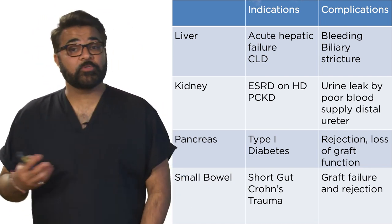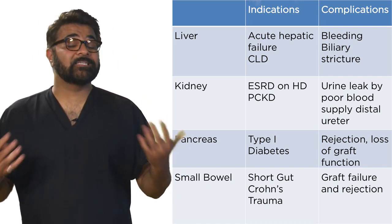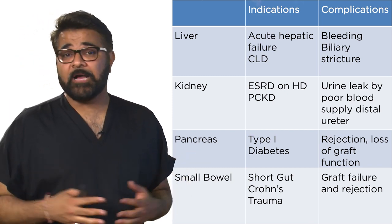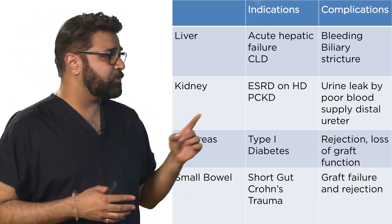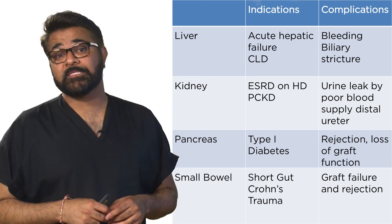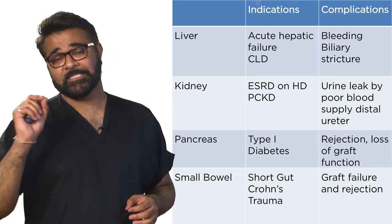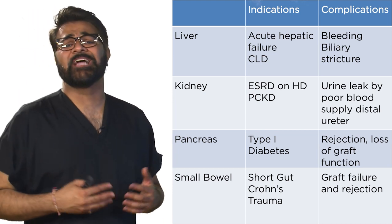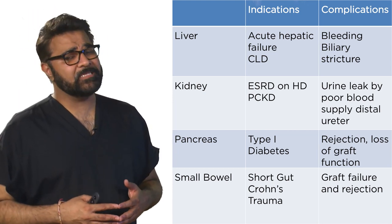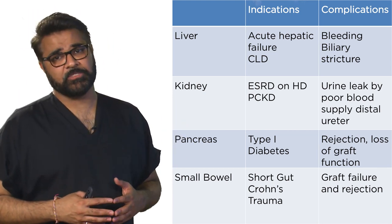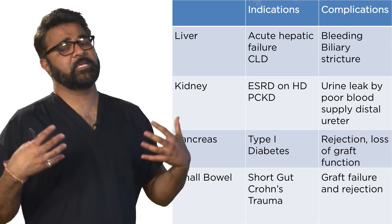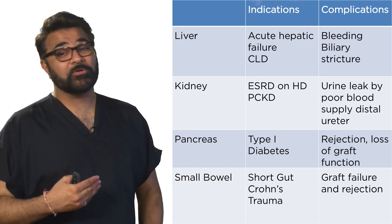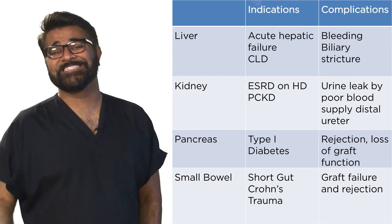Kidney transplants can be done for end-stage renal disease on hemodialysis or PCKD. The most common complication is a urine leak due to poor distal blood supply to the distal ureter. Pancreatic transplants are done for type 1 diabetes, and the more common complications are rejection and loss of graft function.